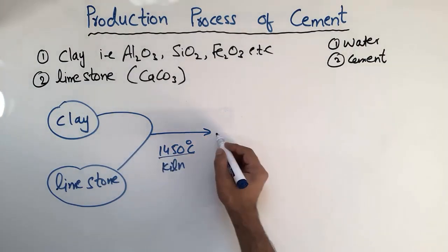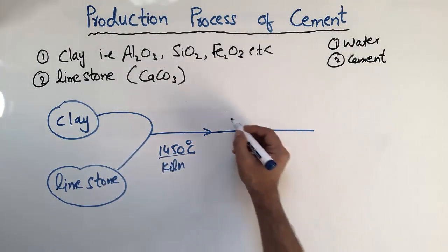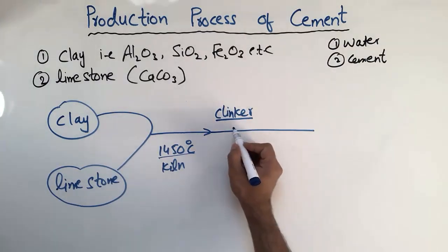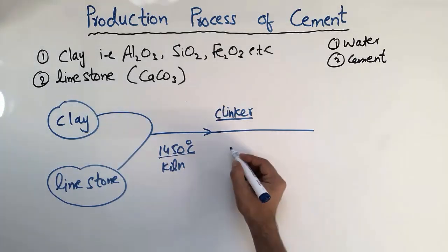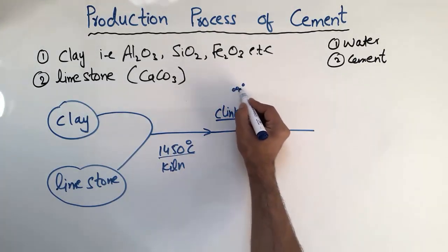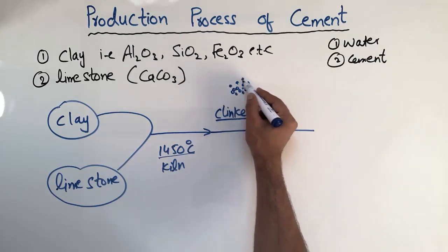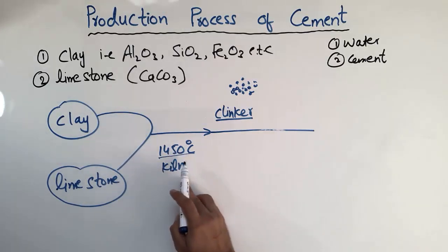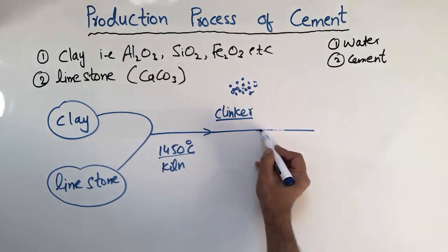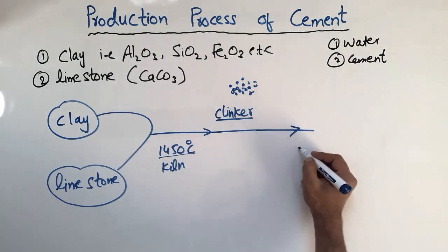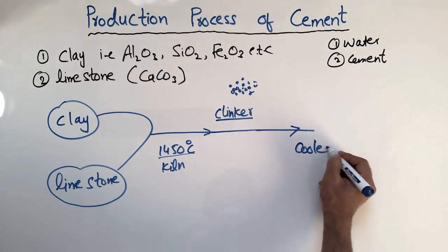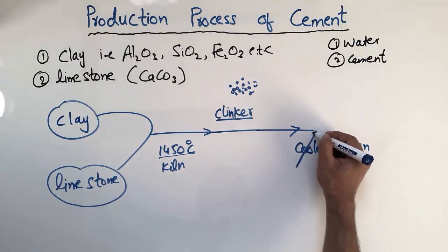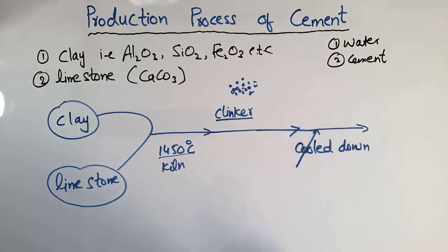After combining these two materials at this temperature in the kiln, they are passed further and they form clinker. Clinker is very important — it consists of small gray ball-type pieces, which are the combination of clay and limestone heated at 1450°C in the kiln. After forming, the clinker is passed and cooled down.